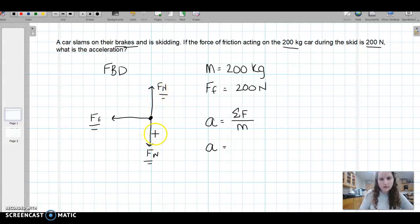These two are equal in opposite directions, so we can just say that the sum of the forces in the y is zero. But the sum of the forces in the x is not zero. We see that there is a frictional force, and that frictional force is 200 newtons in what direction? To the left. So we have negative 200 newtons there, all divided by 200 kilograms. If we broke out our calculator, we know that the acceleration is one meter per second squared.